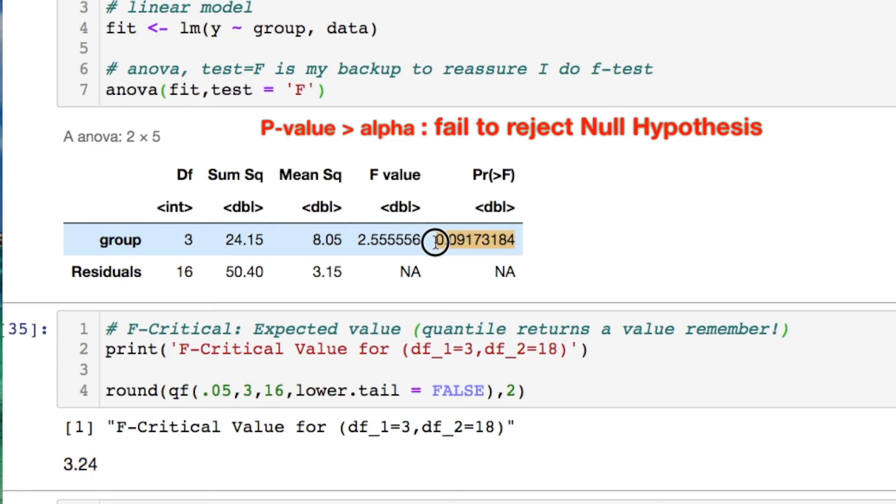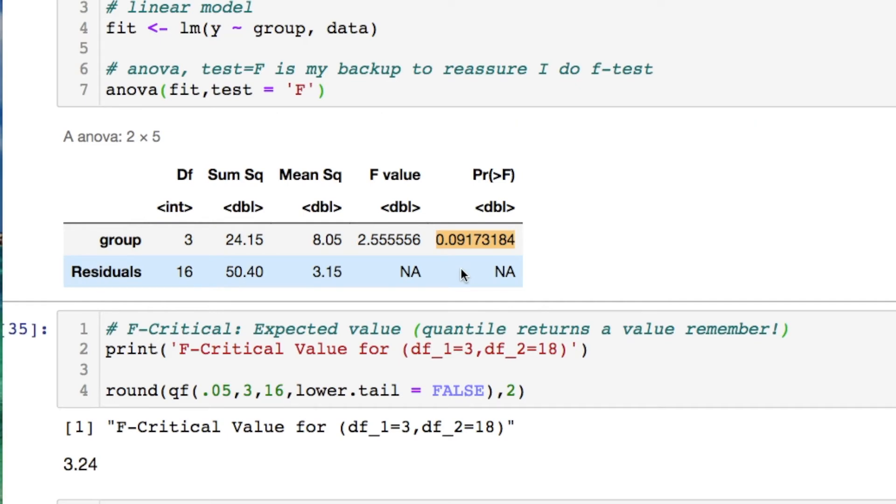You can do a comparison also by the probability. The probability here is 0.09. Yet we're doing a 0.05 alpha. Which means that this is bigger than the alpha. Therefore we do not reject the null hypothesis.